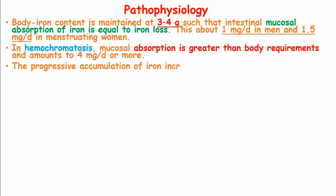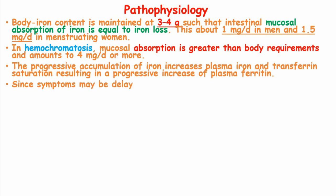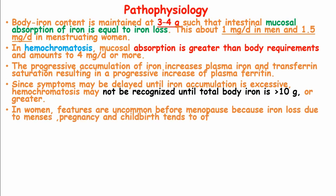The progressive accumulation of iron increases plasma iron and transferrin saturation, resulting in a progressive increase of plasma ferritin. Since symptoms may be delayed until iron accumulation is excessive, hemochromatosis may not be recognized until total body iron is more than 10 grams. In women, features of hemochromatosis are uncommon before menopause because iron loss due to menses, pregnancy, and childbirth tends to offset the iron accumulation.